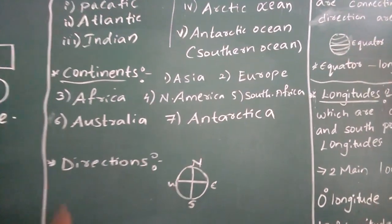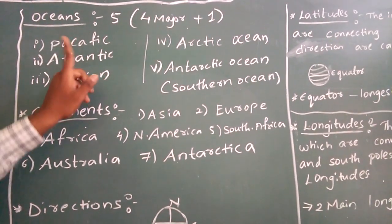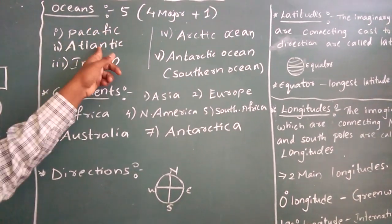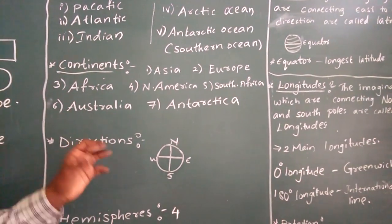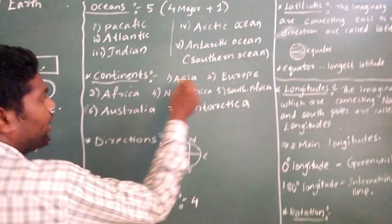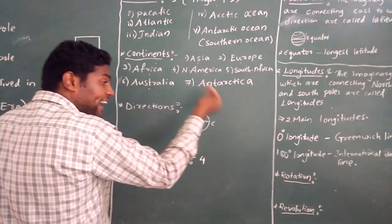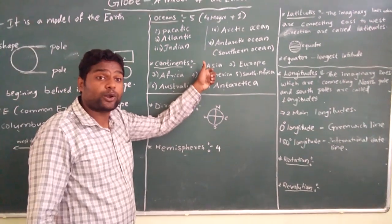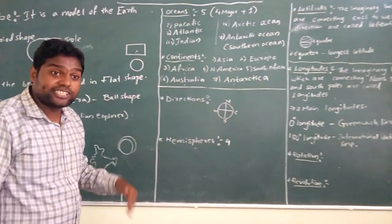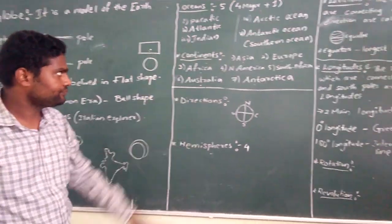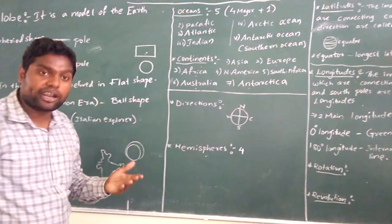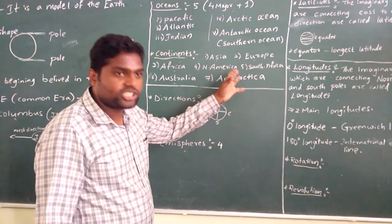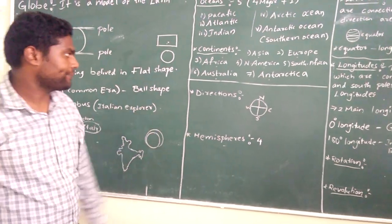We have five oceans: Pacific Ocean, Atlantic Ocean, Indian Ocean, Arctic Ocean, and Antarctic Ocean. We will discuss mostly about the four major oceans. Coming to continents — we have seven continents: Asia, Europe, Africa, North America, South America, Australia, and Antarctica. Asia is the largest continent in the world. Australia is the smallest continent in the world. Africa is called the dark continent. Antarctica is called the frigid continent because most of its area is covered with snow throughout the year.